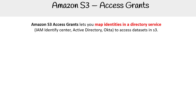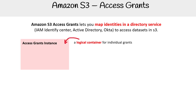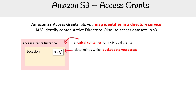There are some components we should know about. The first is the access grant instance — this is the logical container for individual grants. Then you have the location, where you're saying you'll let all S3 buckets or a subsection of S3 buckets have access. Then you have your granular permissions, which are your grants.